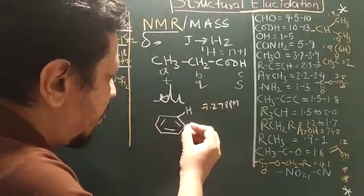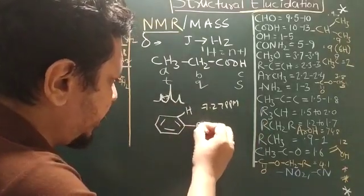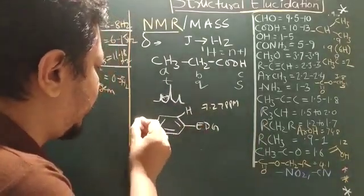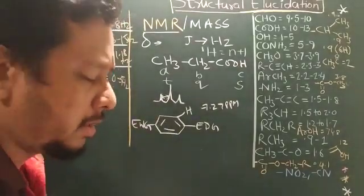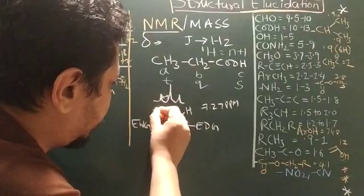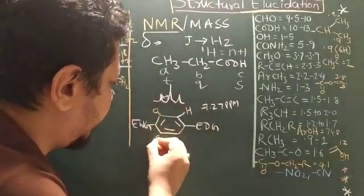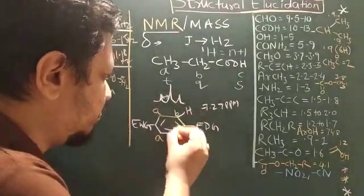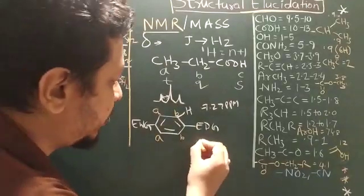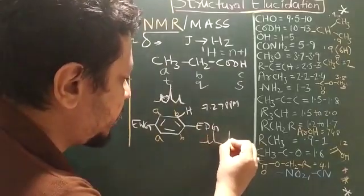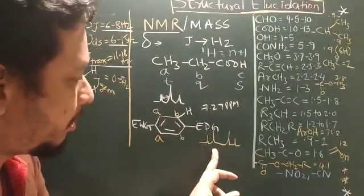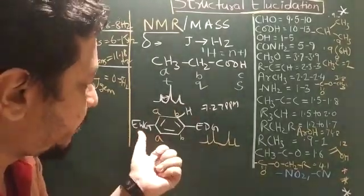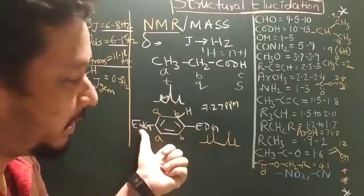Now, whatever the electron donating group, if it is attached to benzene over here and electron withdrawing group, the disubstituted benzene always gives two different peaks of benzene. And that's why you get doublet of doublet, which is not a quartet, the doublet of doublet kind of peak in a para-disubstituted benzene.